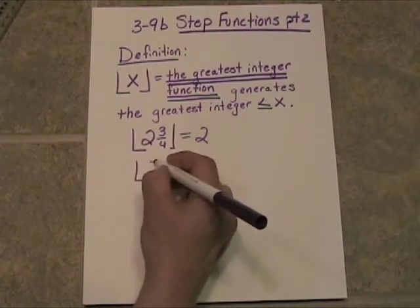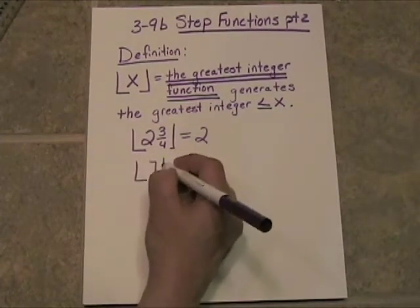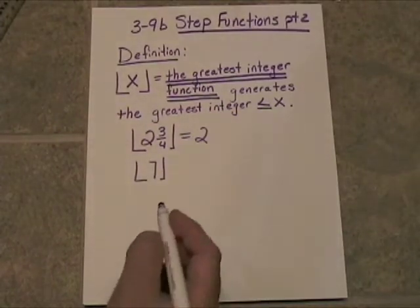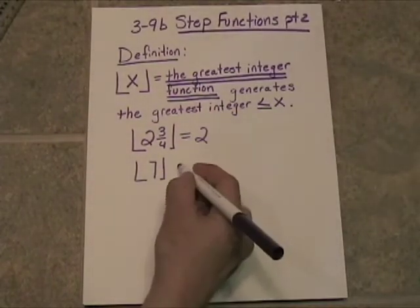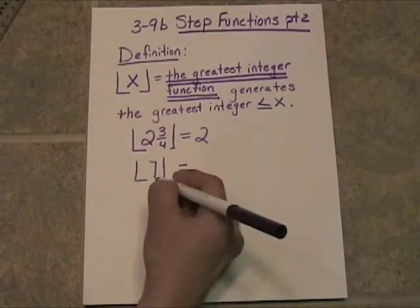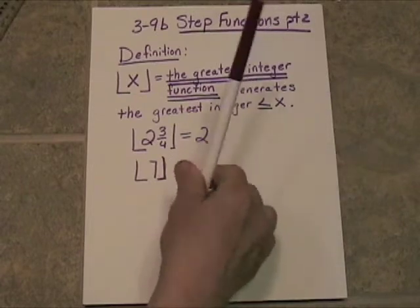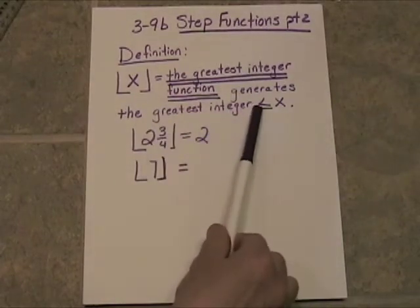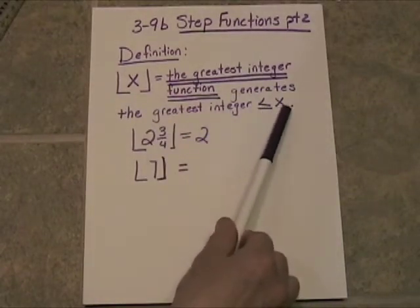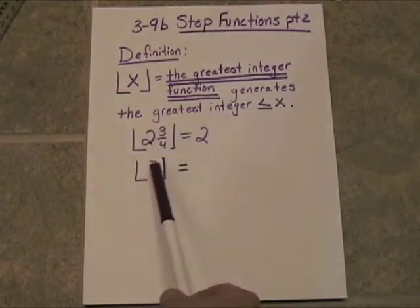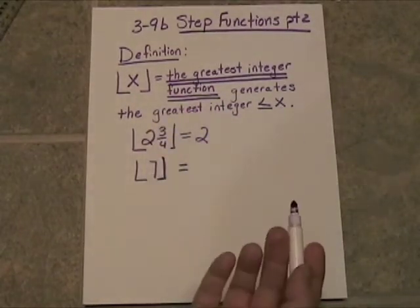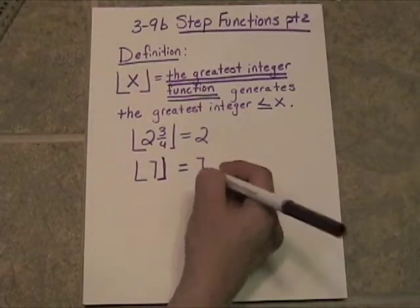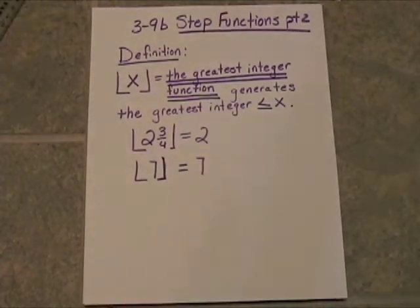How about the greatest integer of 7? The greatest integer that's less than or equal to x — well, 7 is an integer itself. So the greatest integer of 7 is just 7.